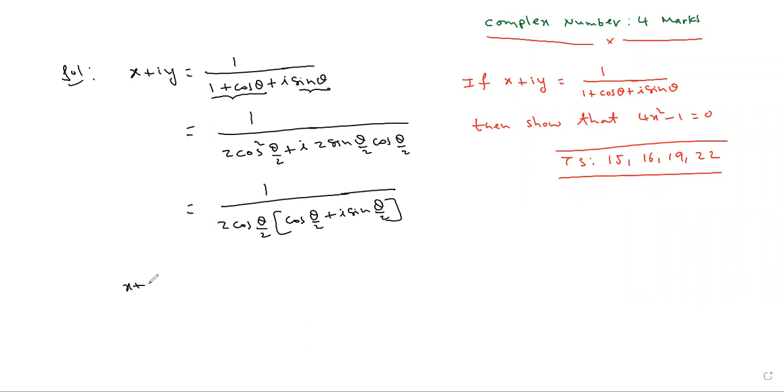Now rationalize that. 2 cos theta by 2, no problem, it is a real number. It is complex, that denominator. Rationalize that.